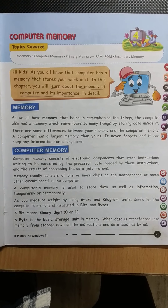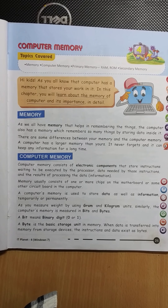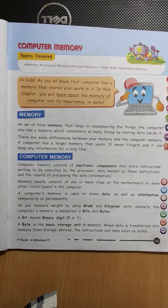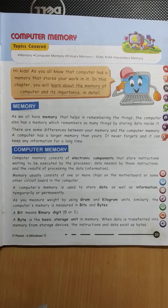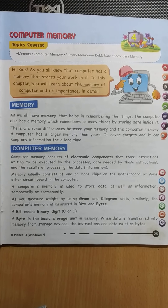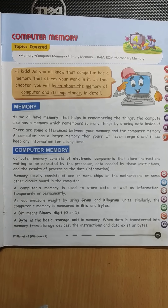Computer memory consists of electronic components that store instructions waiting to be executed by the processor, data needed by these instructions, and the results of processing the data information. Memory usually consists of one or more chips on the motherboard or some other circuit board in the computer. A computer's memory is used to store data as well as information, temporarily or permanently.